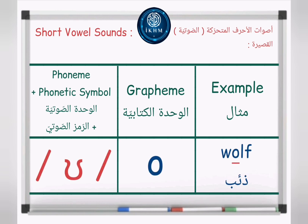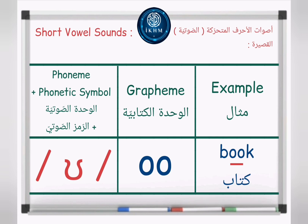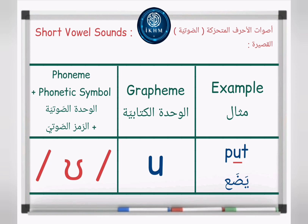Phoneme plus phonetic symbol: /ʊ/. Grapheme: letter O. Example — wolf, /ʊ/, wolf. Grapheme: letters O-O. Example — book, /ʊ/, book. Grapheme: letters O-U. Example — should, /ʊ/, should. Grapheme: letter U. Example — put, /ʊ/, put.